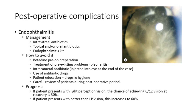To avoid endophthalmitis: use betadine thoroughly preoperatively; treat any pre-existing conditions such as blepharitis before surgery; use an intracameral antibiotic injected into the eye at the end of the case; ensure patients use antibiotic drops post-operatively as prescribed; educate patients on eye hygiene; and carefully review patients during the post-operative period to look out for any signs of endophthalmitis.